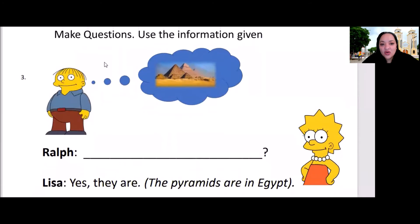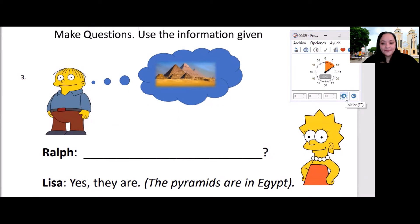Let's check the next one out. So, here we have Ralph and Lisa. And the clue is, Yes, they are. The pyramids are in Egypt. So, what is the question? Ready? Go. Fantastic. So, the question that Ralph asks is, Are the pyramids in Egypt? And Lisa is very smart. And she said, Yes, they are. Very good. Well done.